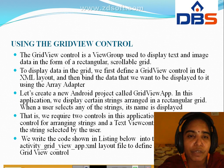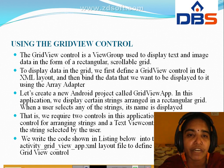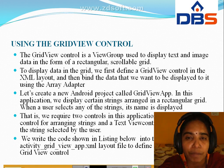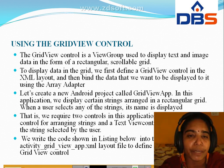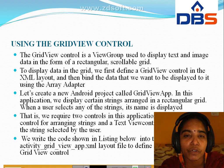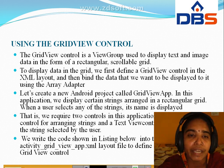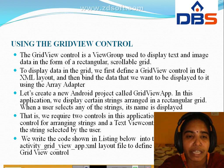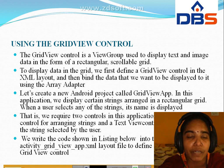Next topic is using the grid view control. The grid view is a view group used to display text and image data in a rectangular scrollable grid. To display in the XML layout, you bind the data you want to display by using the array adapter.